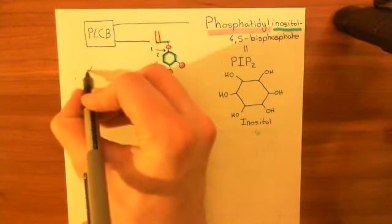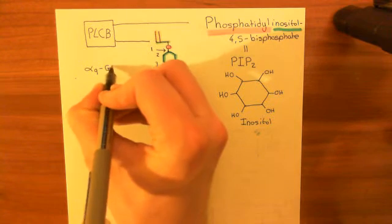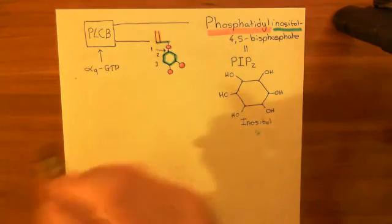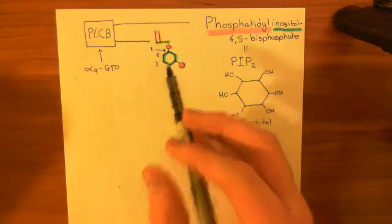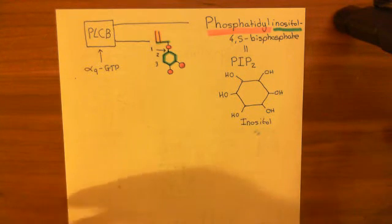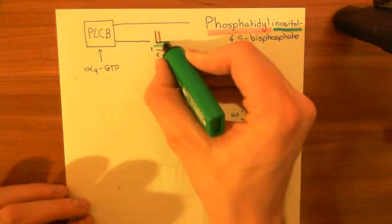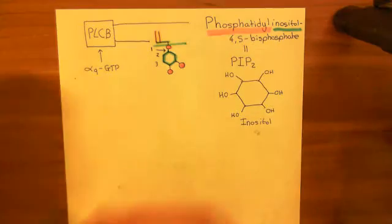When the alpha-Q GTP complex comes and binds to phospholipase C beta and activates it, phospholipase C beta is going to break down the PIP2 molecules. It's going to cleave this bond here between the phosphate group and the glycerol molecule.